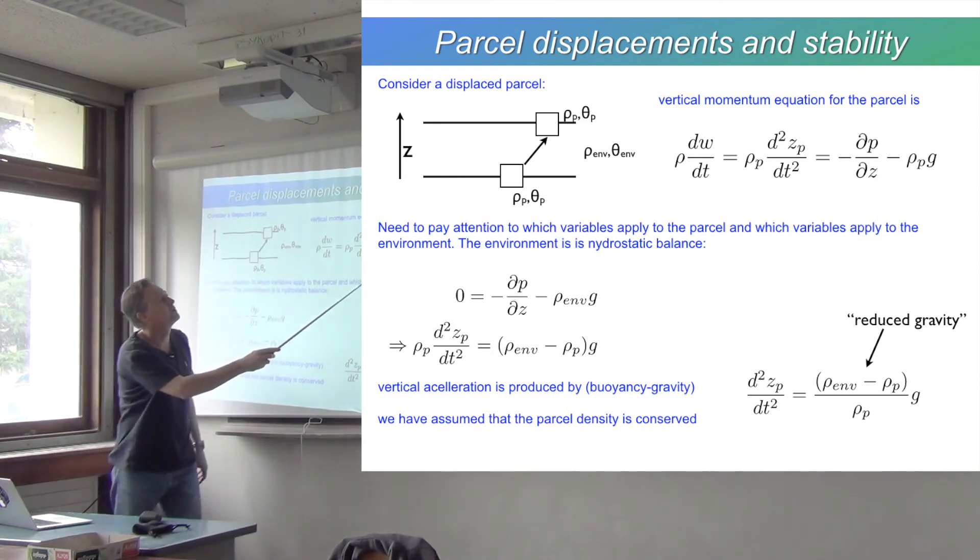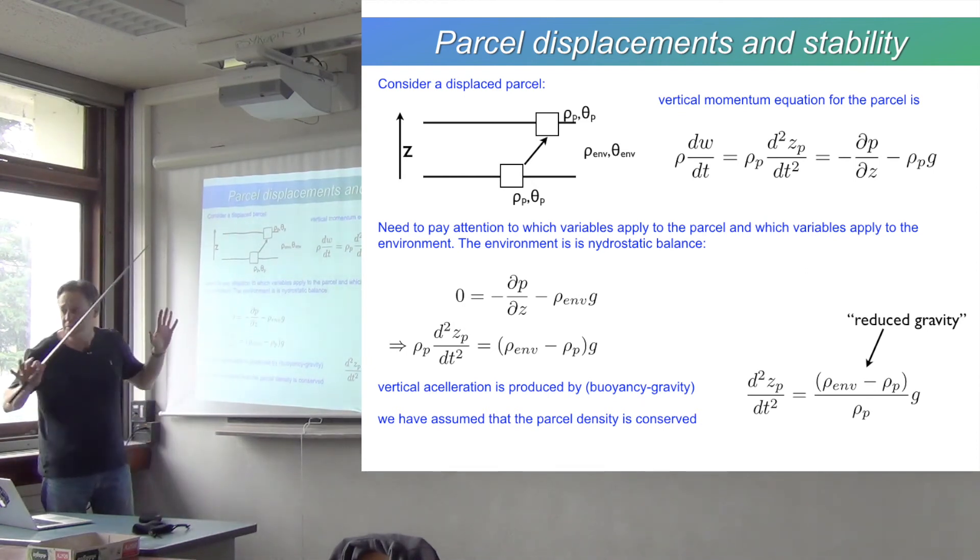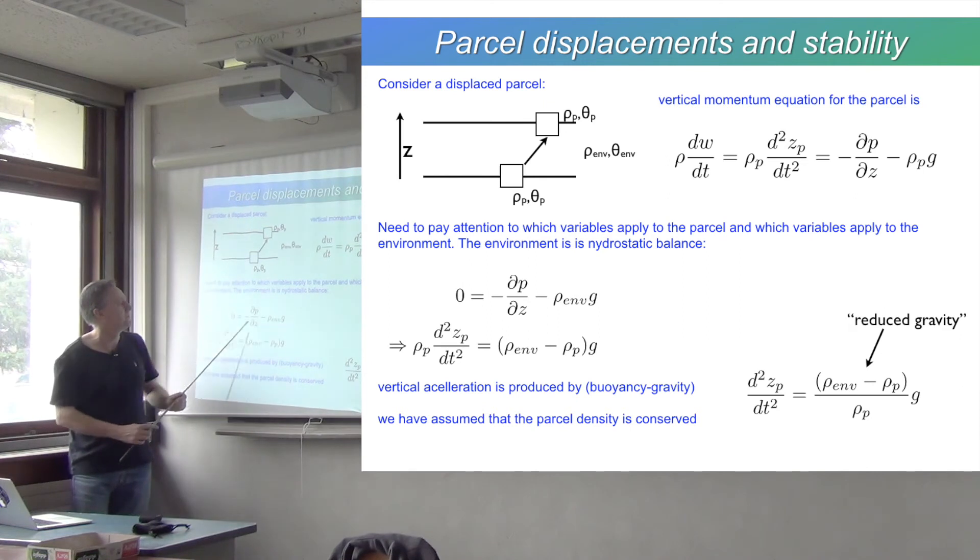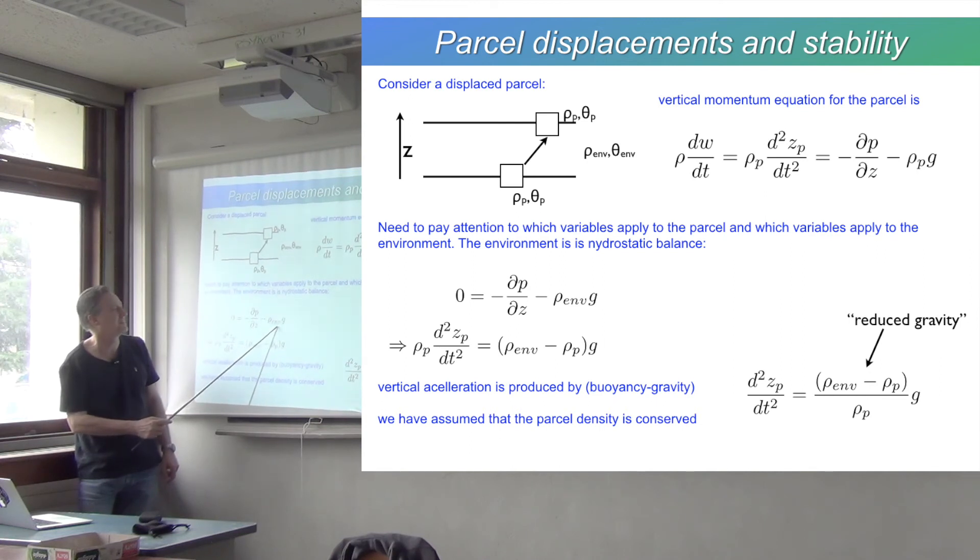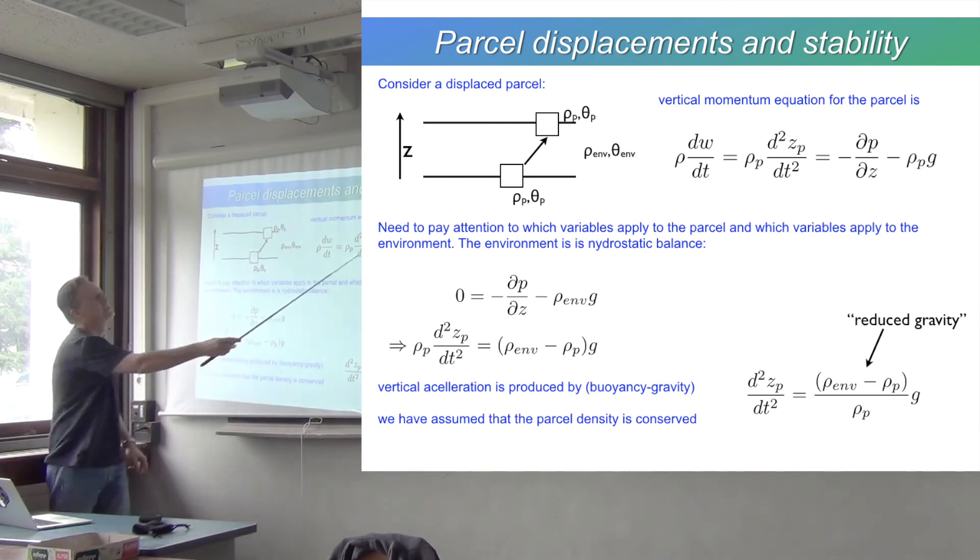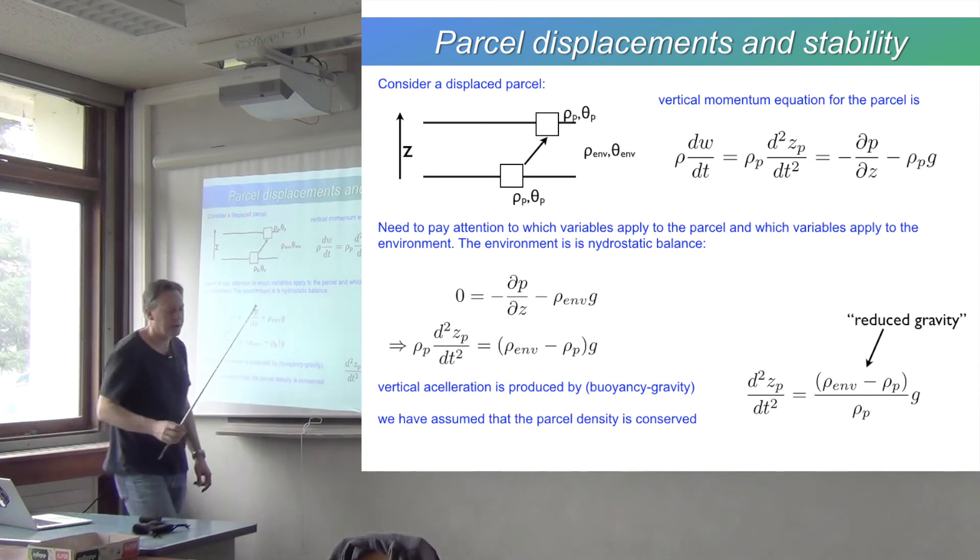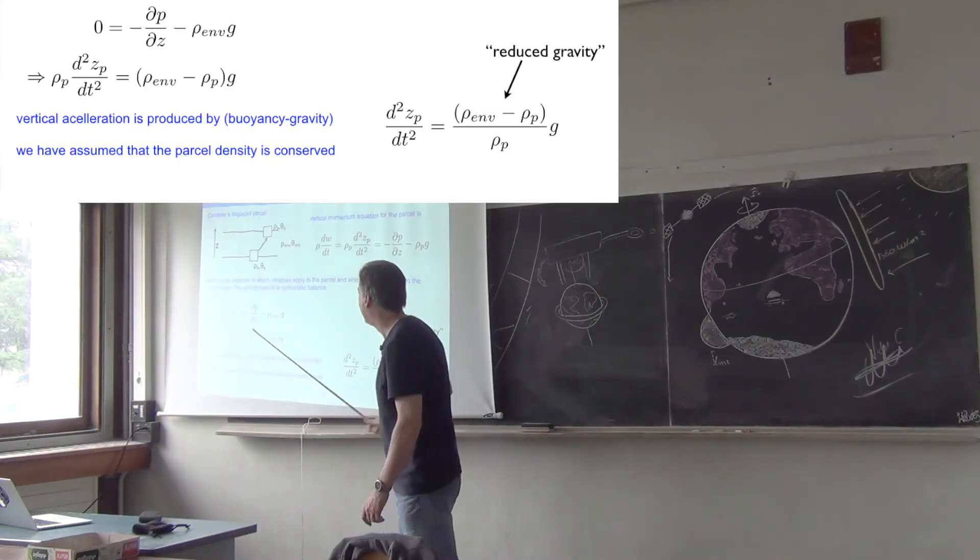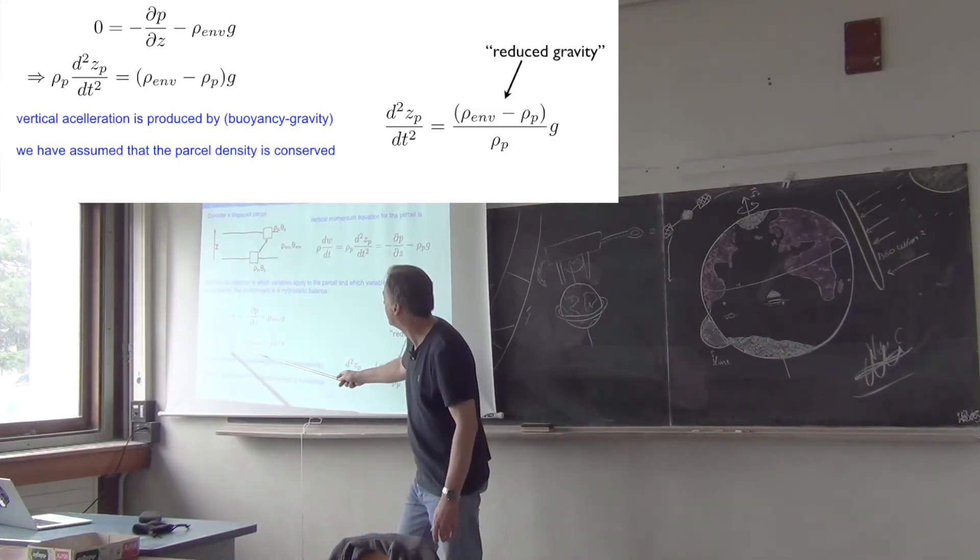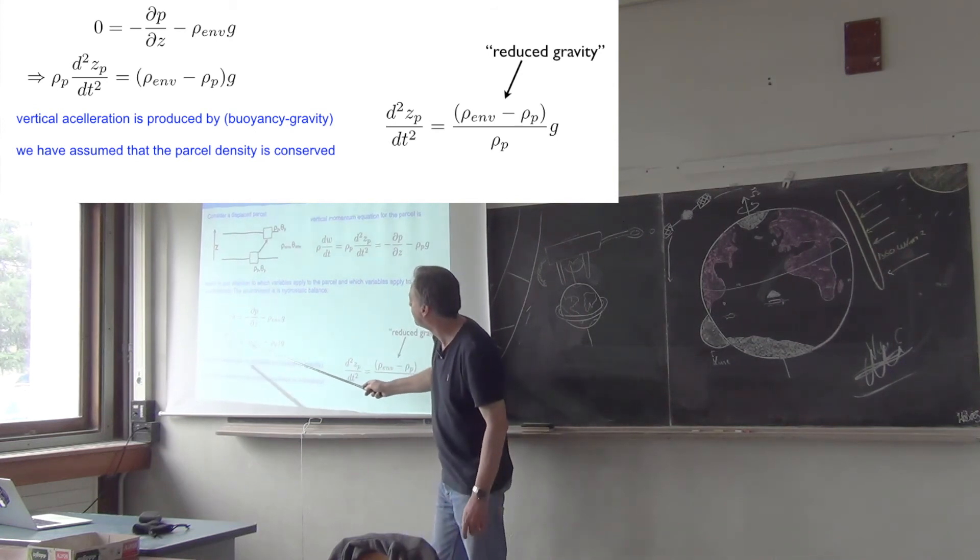That will equal the net imbalance of force per unit mass, which is minus the vertical pressure gradient minus ρ_p times g. That's our force imbalance. If it's hydrostatic then that is zero, but if there's a slight imbalance because of the movement of this parcel, that will not be zero. However, the environment around the parcel will be in hydrostatic balance.